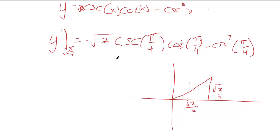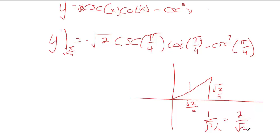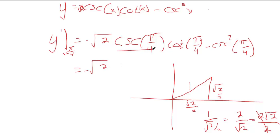Cosecant is the reciprocal of sine, so instead of doing opposite over hypotenuse, we're doing hypotenuse divided by opposite. So cosecant pi over four is one over square root of two over two. Flipping and multiplying that fraction gives two over square root of two. Multiplying top and bottom by square root of two to rationalize, and two divided by two makes square root of two. So cosecant pi over four equals square root of two.